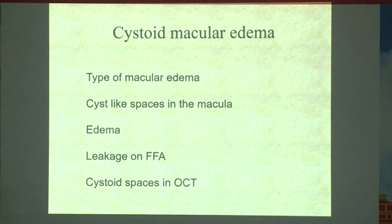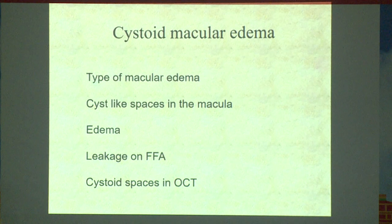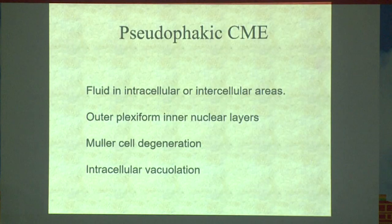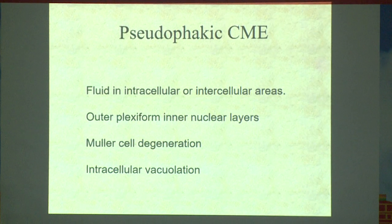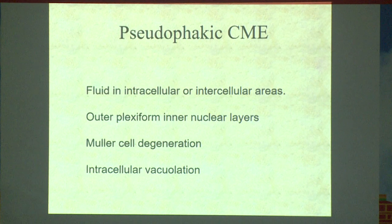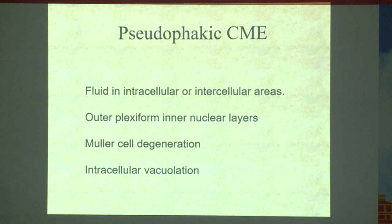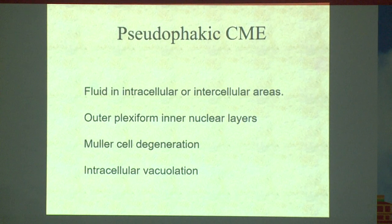Cystoid macular edema usually occurs later — these are two terrible complications. Cystoid macular edema is still manageable: you can use NSAIDs and posterior sub-Tenon injection. Endophthalmitis has to be managed as early as possible with an intravitreal injection, or if the vision drops, with vitrectomy.